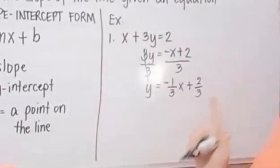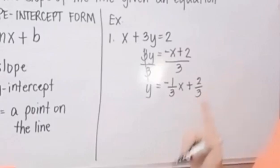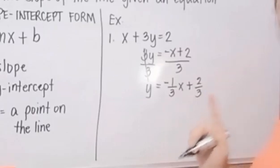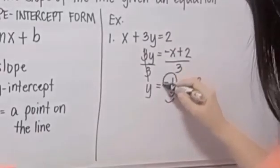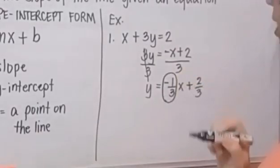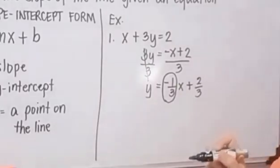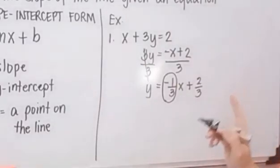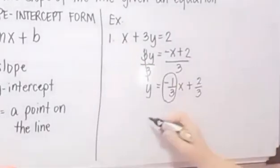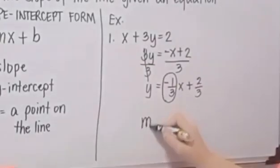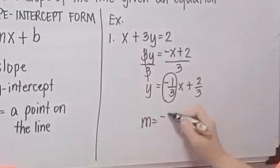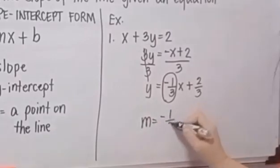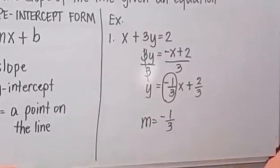Where is our M? This value here is our M. Our slope is negative one-third.